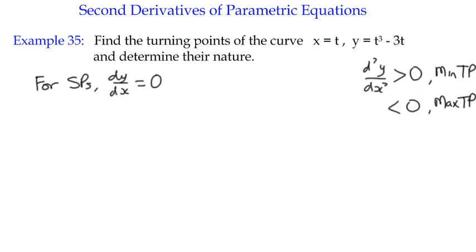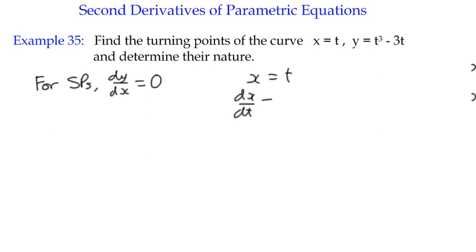That tells us that we have to find the first derivative, and then equate it to zero. What is our function? We've got x given as just t, so dx/dt is just 1, and y is represented by the function t³ - 3t. So dy/dt is 3t² - 3.